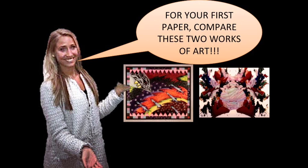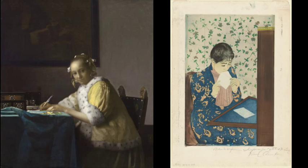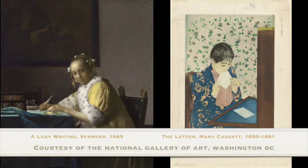So I've broken down the comparison writing process into five easy steps. I'm going to walk you through this process using two amazing images courtesy of the National Gallery of Art in Washington, D.C. You're seated at your desk, you're about to take your art history test, and your instructor directs your attention to the screen and asks you to write a comparison between the two images projected: Vermeer's A Lady Writing and Mary Cassatt's The Letter. What do you do?